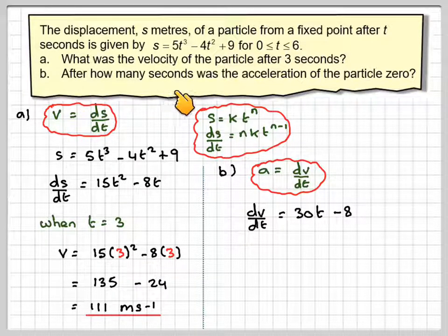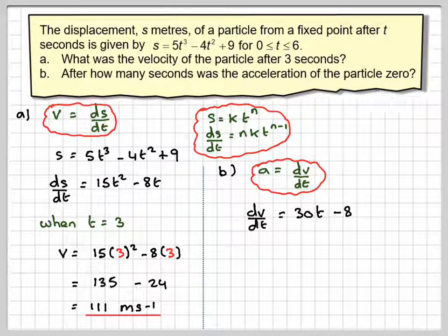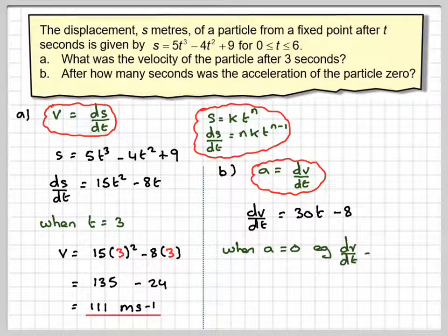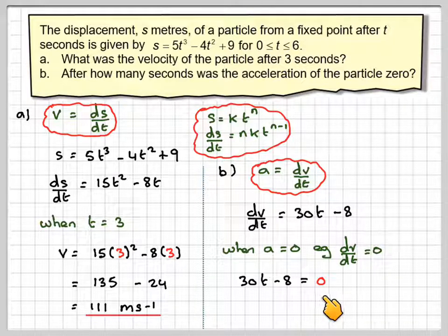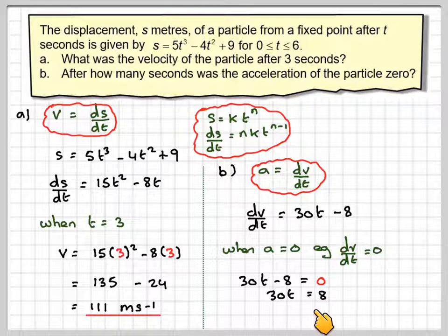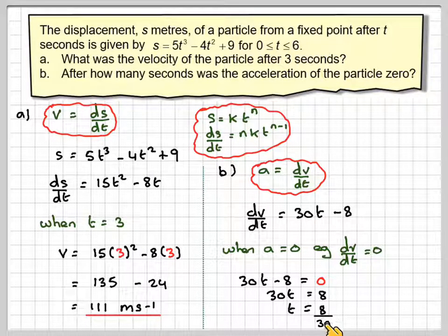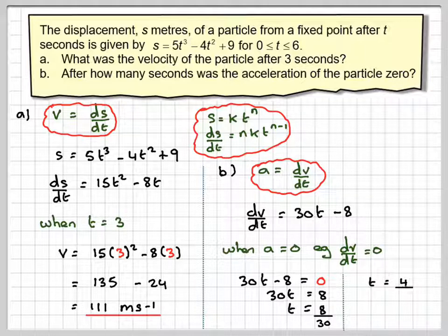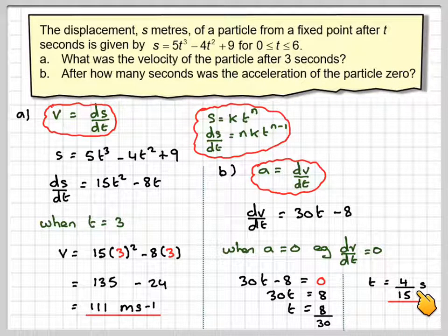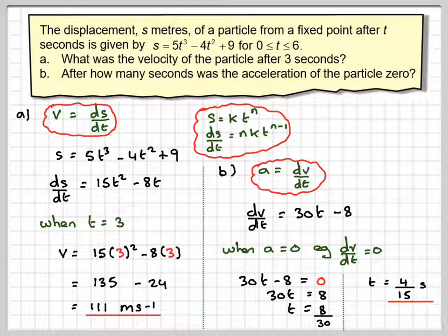We want to know after how many seconds was the acceleration of the particle equal to 0. So we need to put this equal to 0. When a equals 0, i.e. dv by dt equals 0, 30t minus 8 equals 0. So we now solve this. Adding 8, we get 30t equals 8. Dividing by 30, we get t is 8 out of 30, and then we cancel down our answer. So t will be 4 over 15 seconds. Make sure you get the correct units for each part.